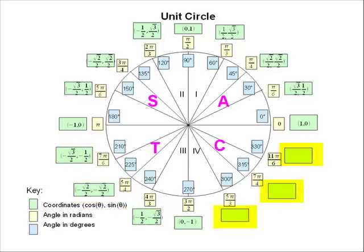Quadrant 4, cosine is positive, so the x term will be positive, and the y term will be negative.